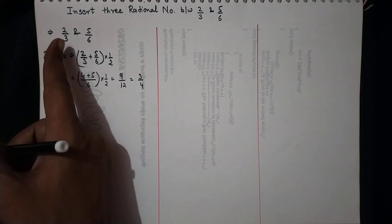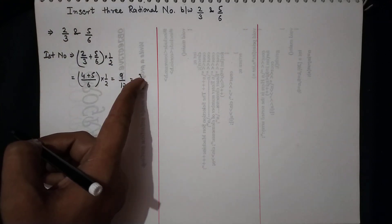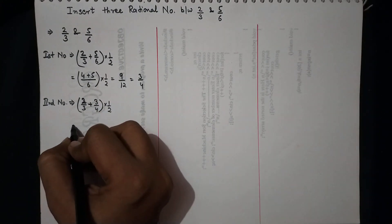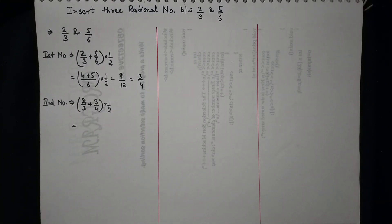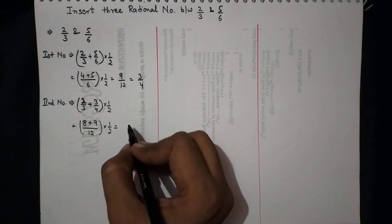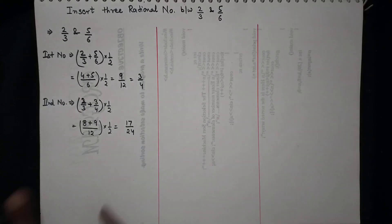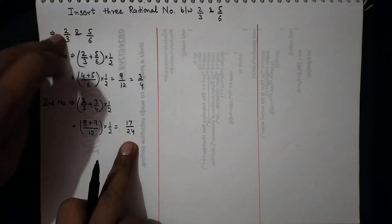Now we proceed to find the second number, taken from between 2/3 and 3/4. So the second number is 2/3 plus 3/4, multiplied by 1/2. Adding these gives 8 plus 9 upon 12, multiplied by 1/2, which equals 17/24. This number lies between the two.